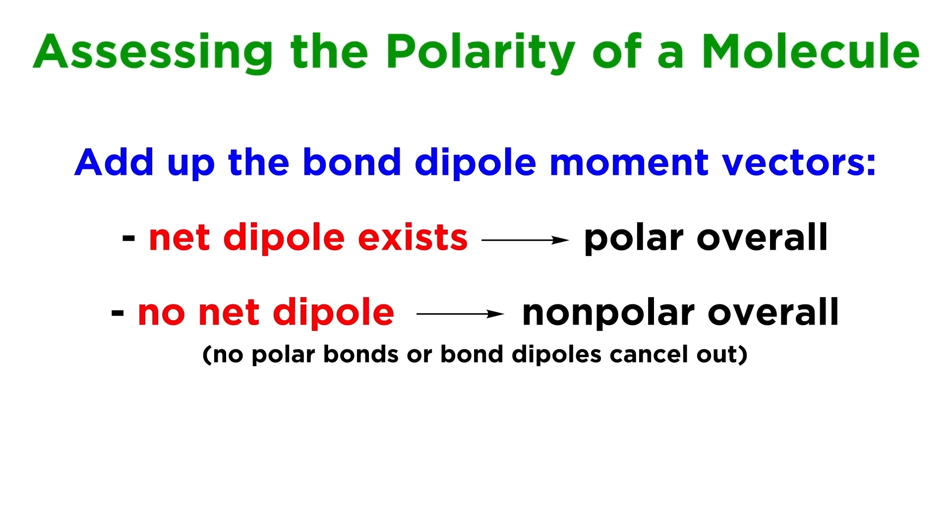If there is no net dipole, which can happen either if there are no polar bonds, or if the vectors of the individual bond dipoles cancel each other out, the molecule is nonpolar.